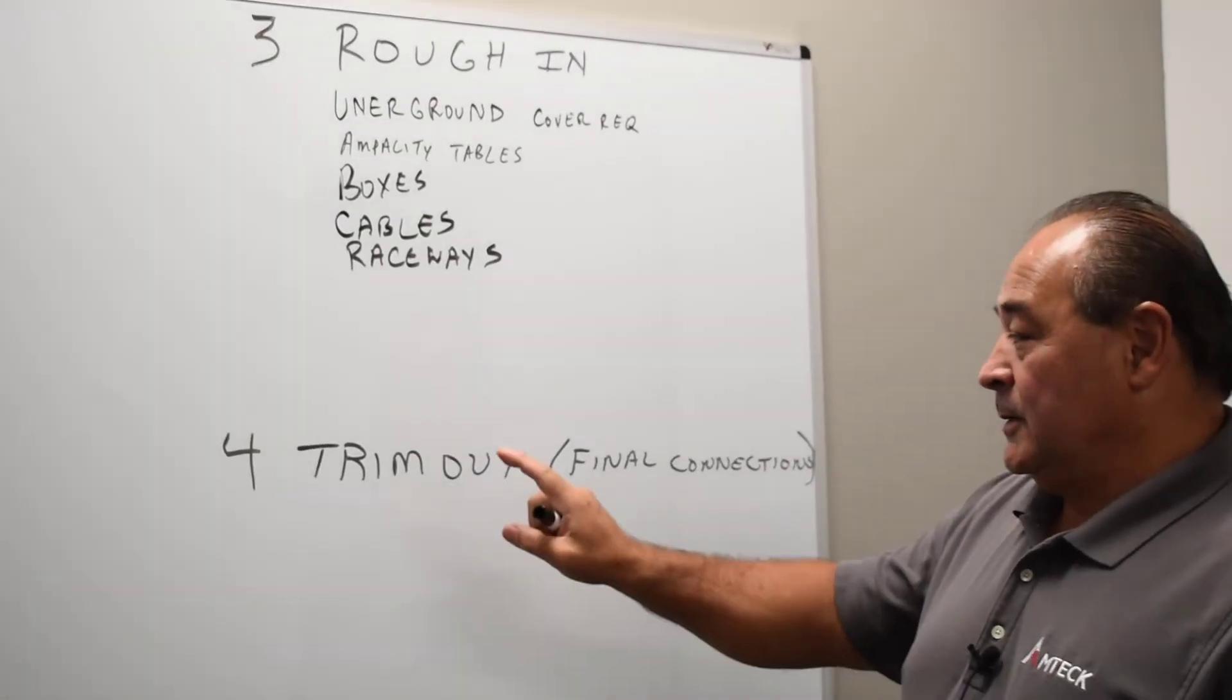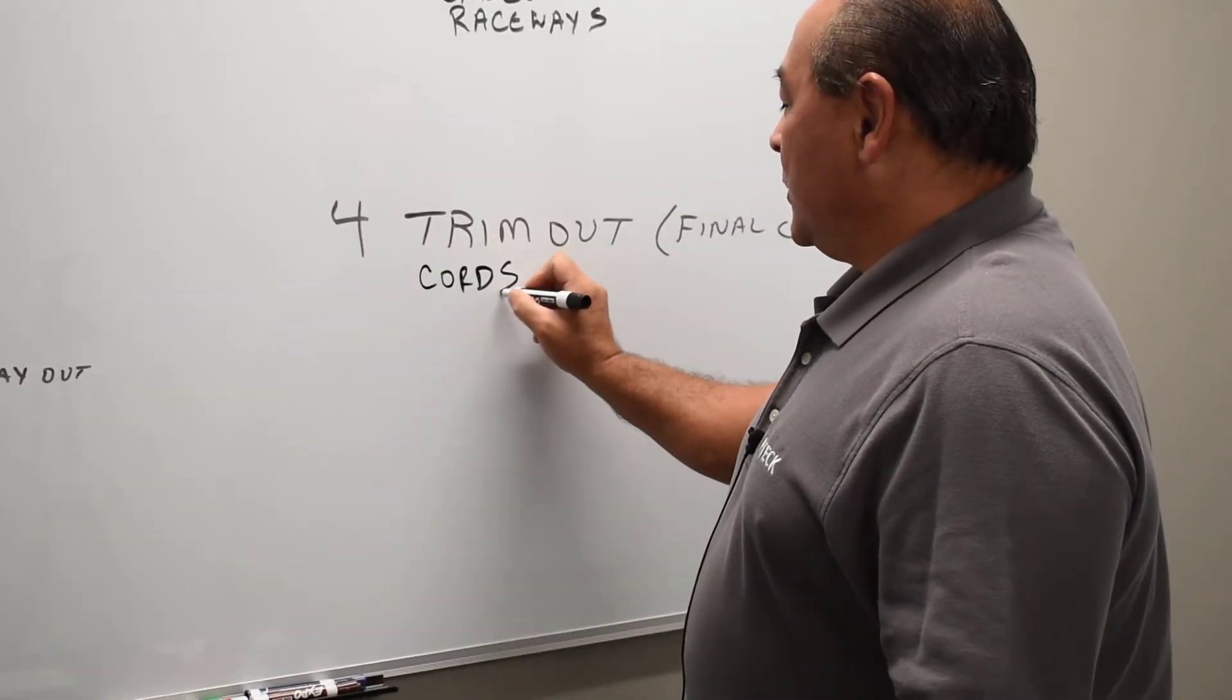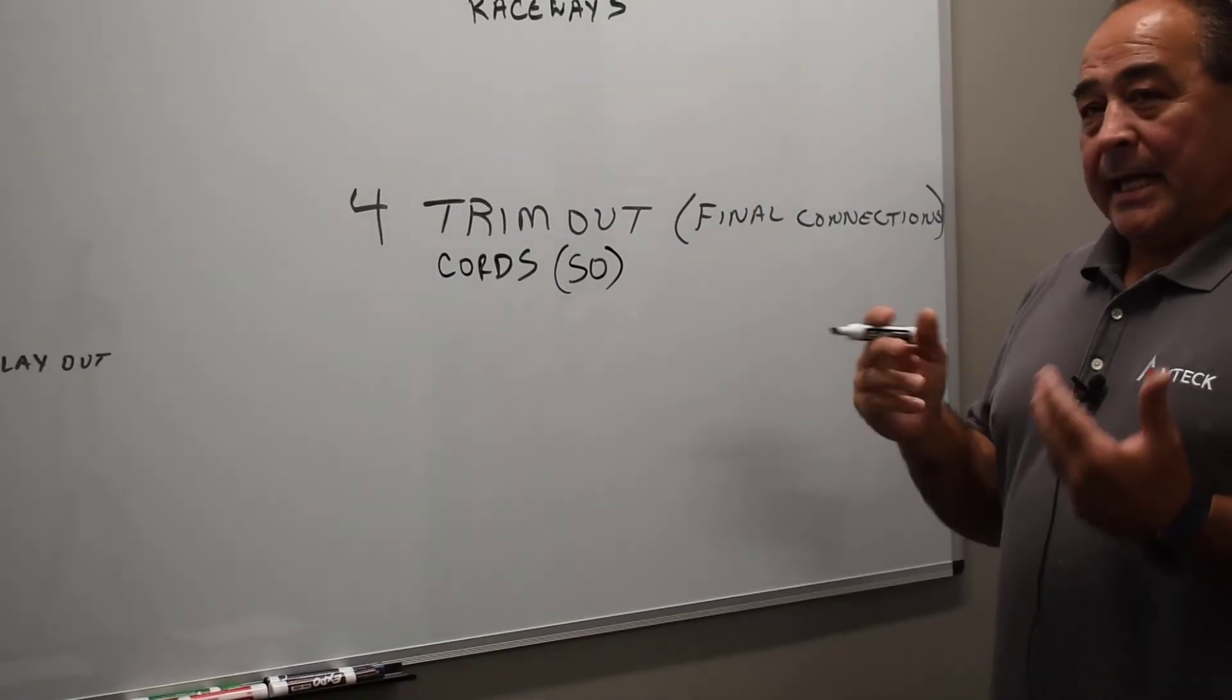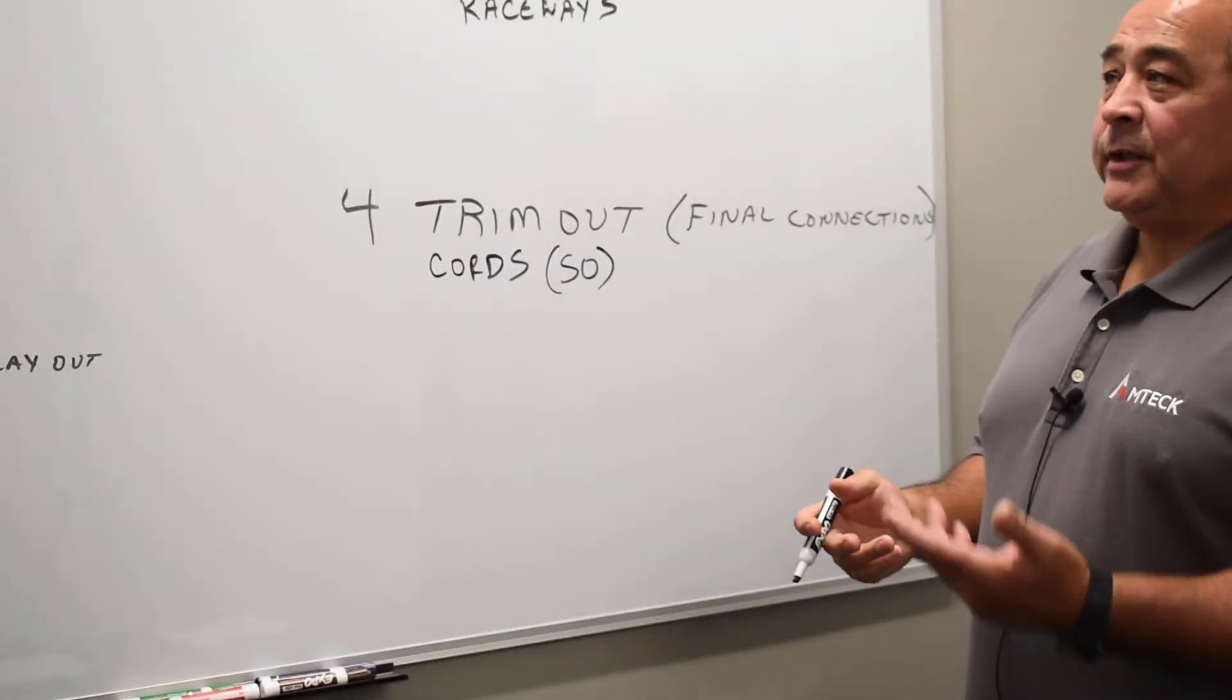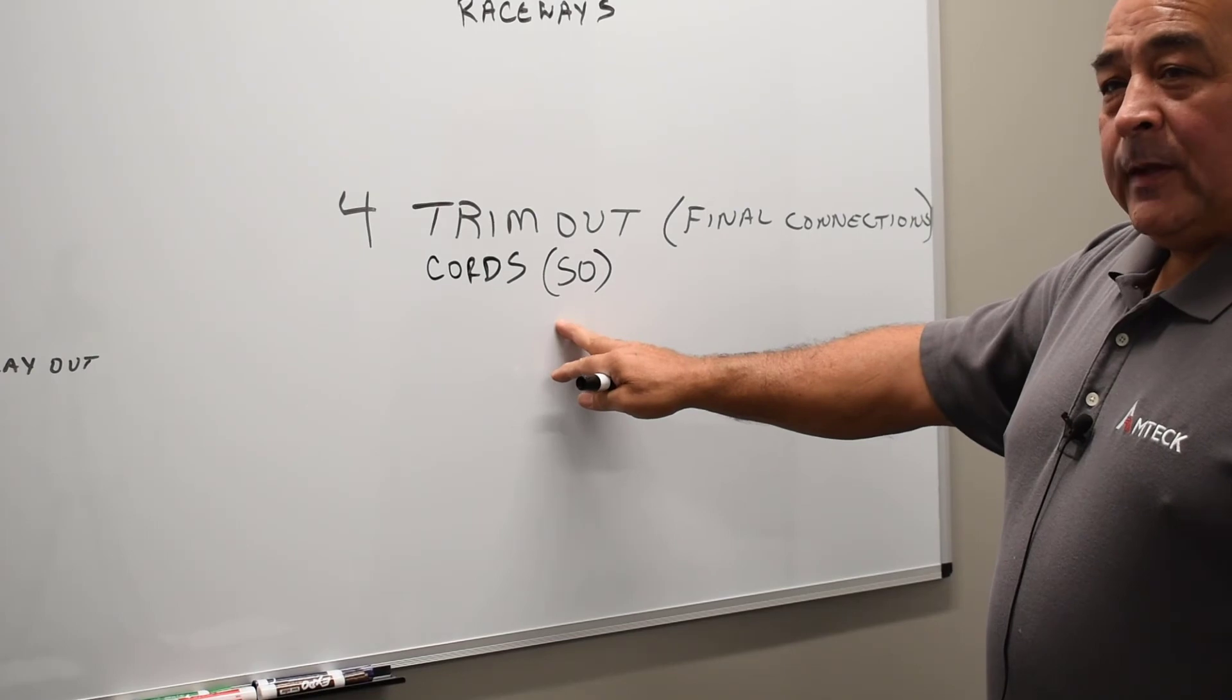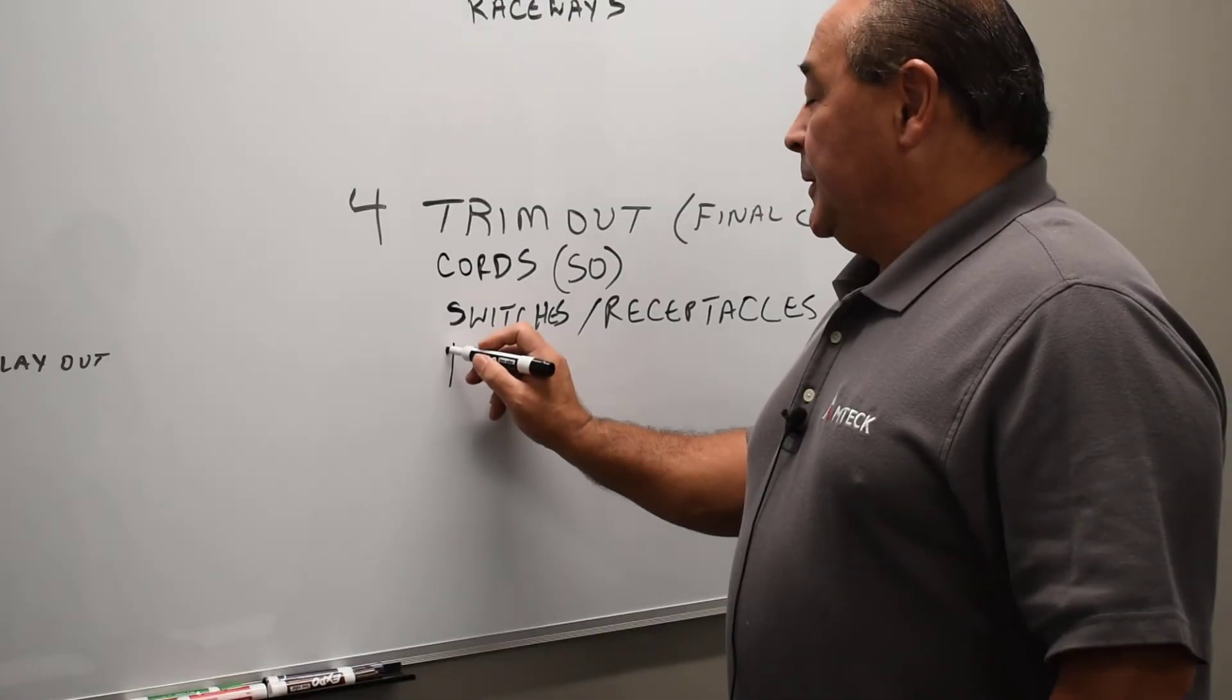So let's run through all the different pieces and parts in Chapter 4. You got cords, cords such as like SO cord. That's a final connection. You put a cord in at the last piece. You don't put a cord in during the rough-in stage or during the planning stage or during safety stage. You put a cord in that gives you flexibility, for like some of the light fixtures have cords, some of the motors have cords. You put cords in, then you get switches and receptacles.